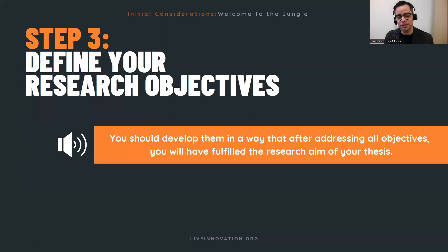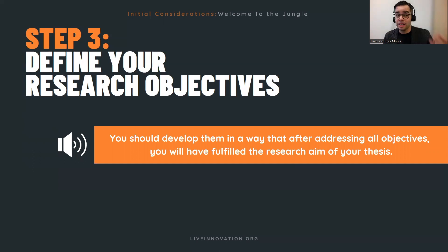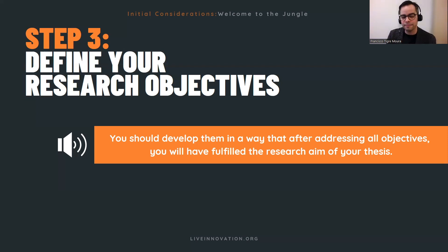Following the research aim, you have your research objectives — the step-by-step of what you're going to do to fulfill that aim. There's a general format that works: your first objective is to review the current literature, then objectives related to data collection, and finally a research objective that covers managerial recommendations. The key test is: if you fulfill all of those objectives, will you have fulfilled your research aim? If the answer is yes, they are well laid out.